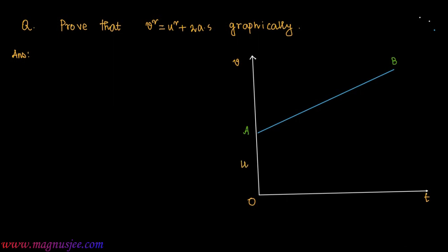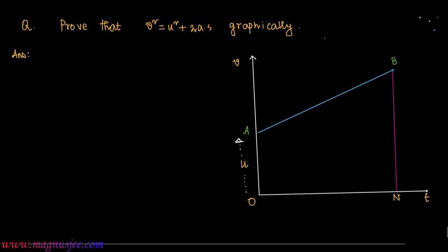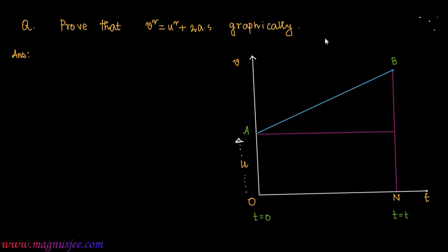u is the initial velocity and u is equal to OA. We draw a perpendicular BN from point B on the time axis, where at O, t = 0, and at N, t = t. From point A we draw a straight line AC parallel to the time axis. AC and BN are imaginary construction lines, while AB is the velocity-time graph.